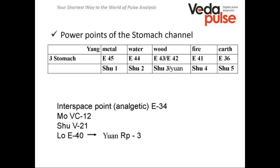The lo point of the stomach channel is point number 40. Such points redistribute energy to the paired meridian. Meridians are paired according to the yin-yang idea, and for the stomach channel the pair is the spleen channel. Energy is redistributed from point E40 to the yuan point RP3 of the spleen channel. If you are interested, you can open your VedaPulse acupuncture extension and find it there.